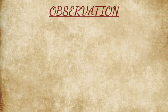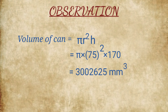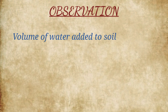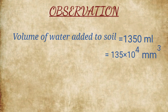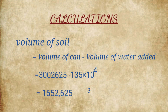Observations. First, volume of can = π r²h = 13,00,625 mm³. Second, volume of water added to the soil = 1350 ml, which is equal to 135 × 10⁴ mm³. Volume of solids = volume of can minus volume of water added.